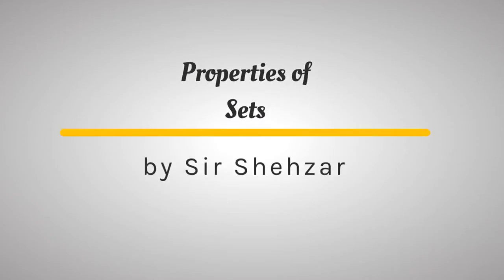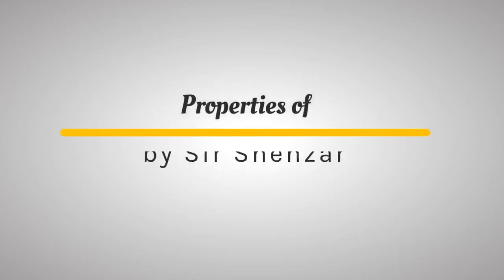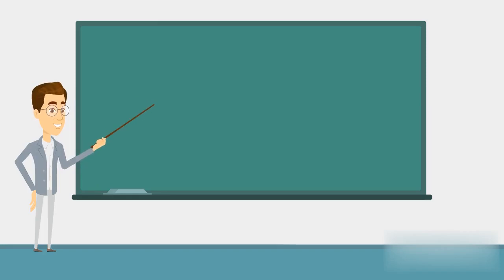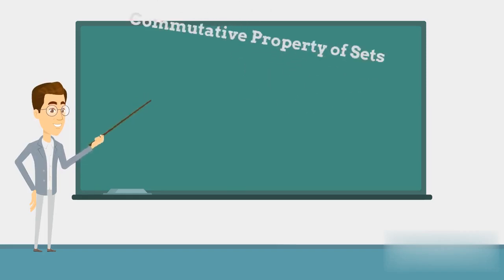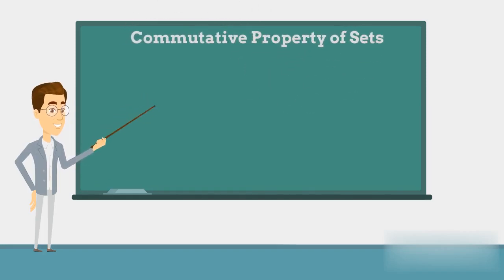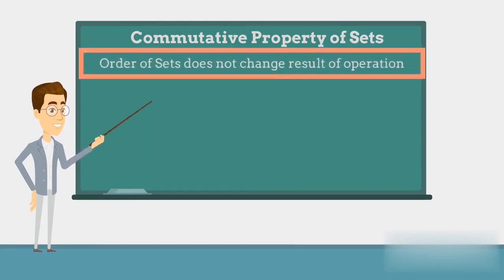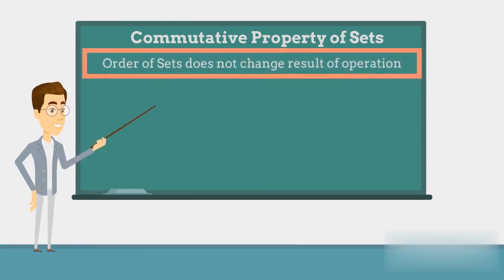Properties of Sets by Sir Scheher. The commutative property for union and the commutative property for intersection says that the order of the sets in which we do the operation does not change the result.